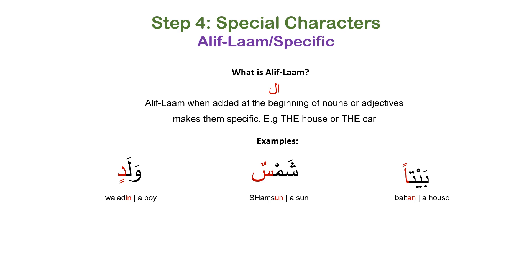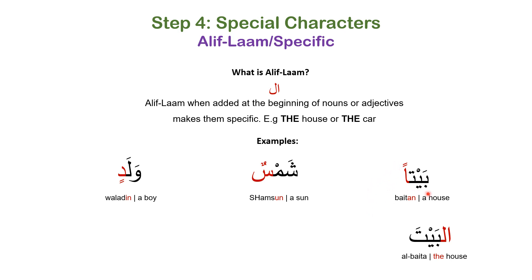Aleph lam is the opposite of tanwin. Rather than saying 'a house' we say 'the house'. Aleph lam is the equivalent of 'the' in English — 'the house', 'the car' — making the noun specific. For example: tanwin 'baytun' equals 'a house'; aleph lam applied gives 'al-bayta', meaning 'the house'. Notice that with double fatha in tanwin, when aleph lam is applied, one fatha drops off and it becomes your original short vowel fatha, pronounced 'al-bayta'.